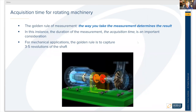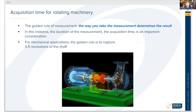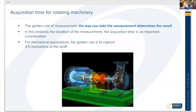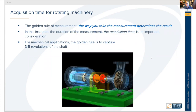For acquisition time with rotating equipment, remember the golden rule: the way you take the measurement determines the result. Making sure we're taking good quality data is essential. The duration of the measurement — the acquisition time — is an important consideration. If you have slow-moving equipment, we want to make sure there are at least three to five revolutions of the shaft, so that we get enough repetition to gather meaningful information from the captured data.